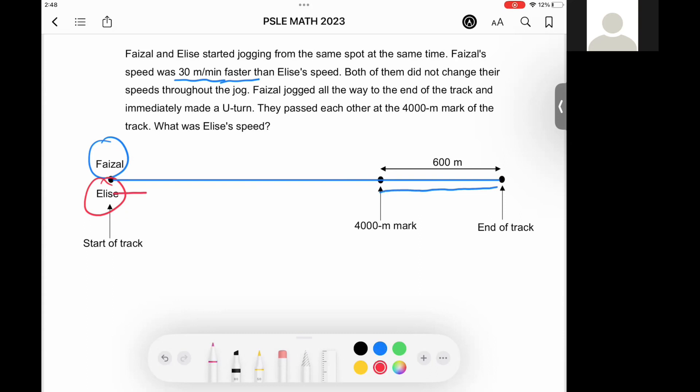Elise is still jogging along this red line here. Eventually they meet at this mark here where I just crossed it out in green. This is the 4000 meters mark of the running track.